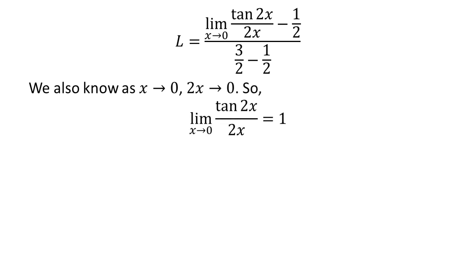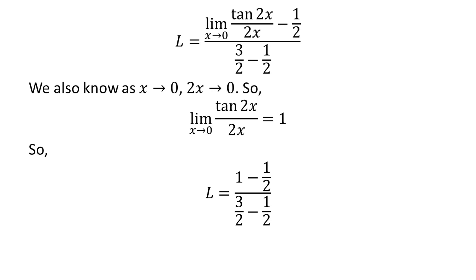We also know that as x approaches 0, 2 times x also approaches 0, so the limit of tangent of 2 times x upon 2 times x as x approaches 0 is equal to 1. The video in the upper right corner verifies this identity, and the link is also given in the description section. Applying this fact gives us L is equal to the limit of 1 minus half upon 3 upon 2 minus half as x approaches 0.